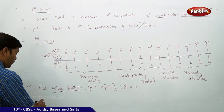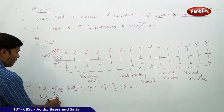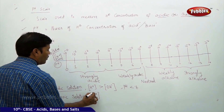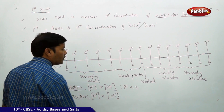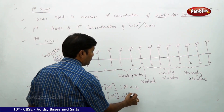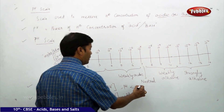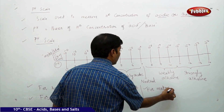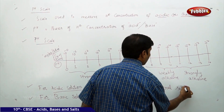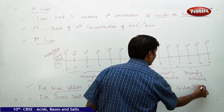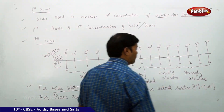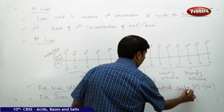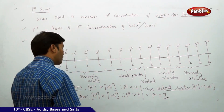For a basic solution, the H+ ion concentration is less than the OH− ion concentration, which is why the pH is greater than 7. For a neutral solution, the H+ ion concentration is equal to the OH− ion concentration, and therefore pH is equal to 7.